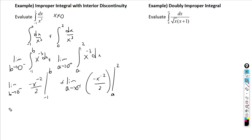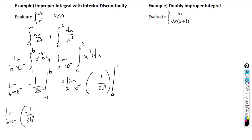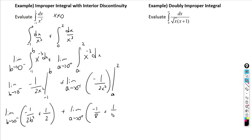Integrating gives −1/(2x²) in both cases. For the first piece, evaluated from −1 to b: limit as b→0⁻ of [−1/(2b²) + 1/2]. For the second piece, evaluated from a to 2: limit as a→0⁺ of [−1/8 + 1/(2a²)].